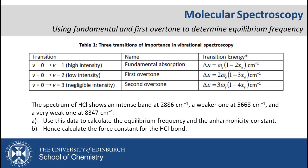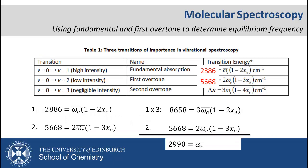The question in the example is shown. We are given more information than we need here, so we can just use the fundamental and first overtone. We write the expressions for these again and enter in the spectroscopic data given. It is easiest to first solve for omega bar e. Multiplying the first equation by 3, then subtracting the second equation, we are left with an expression just containing the equilibrium oscillation frequency. We find that this is 2990 wave numbers.